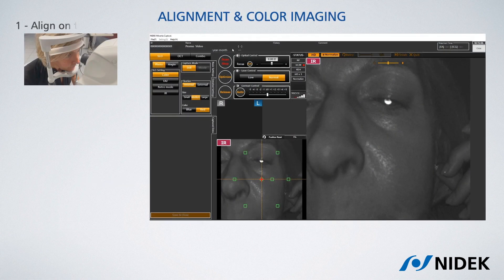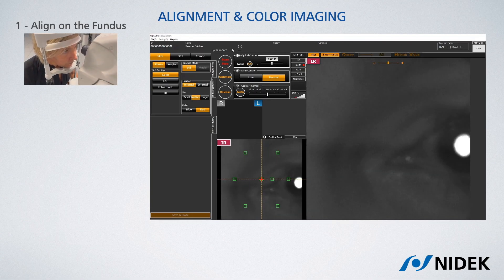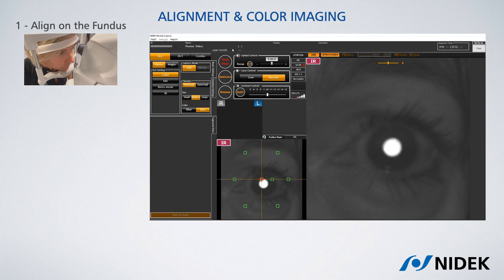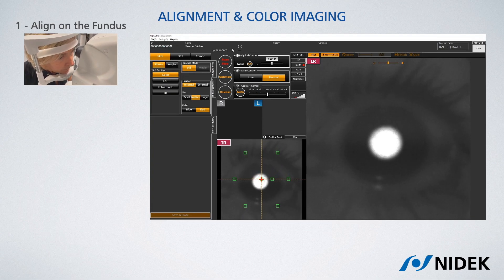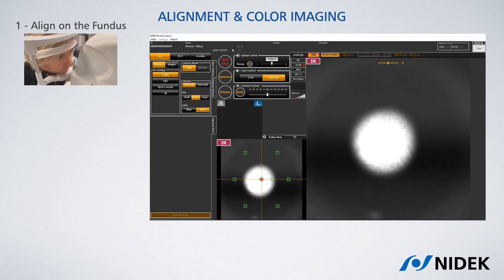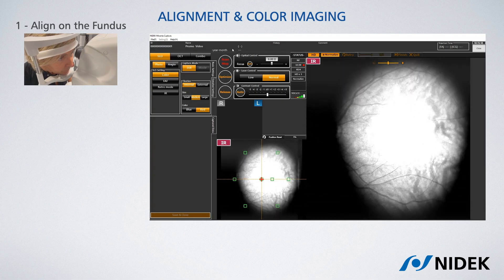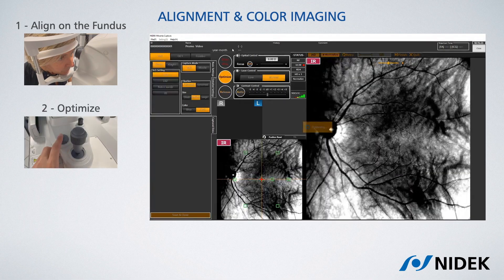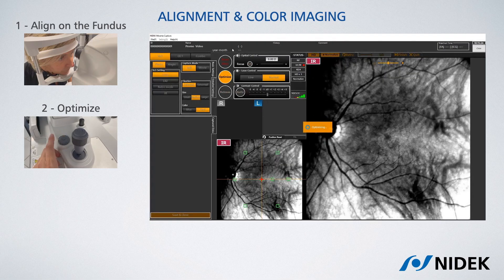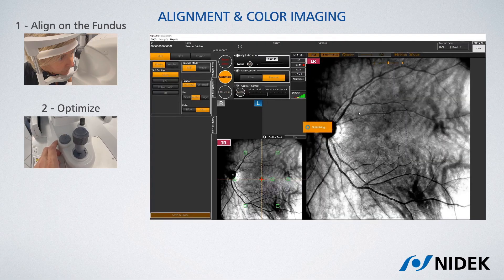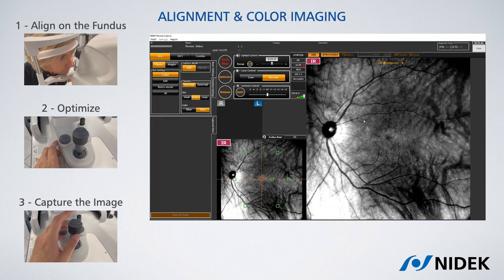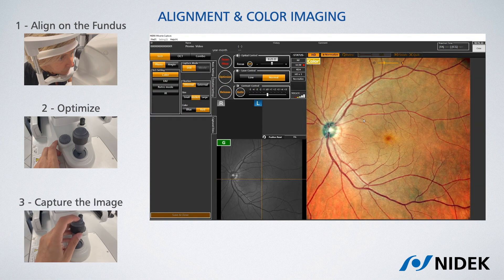Let's now see how to capture these images and let's start with color. You first have to align with the patient's eye, place the optical head in front of it and move towards the patient until the fundus of the eye is completely displayed. At this point you can trigger the optimize function which compensates for possible refractive errors, and once this is done, you can grab your picture by pressing the central joystick button.